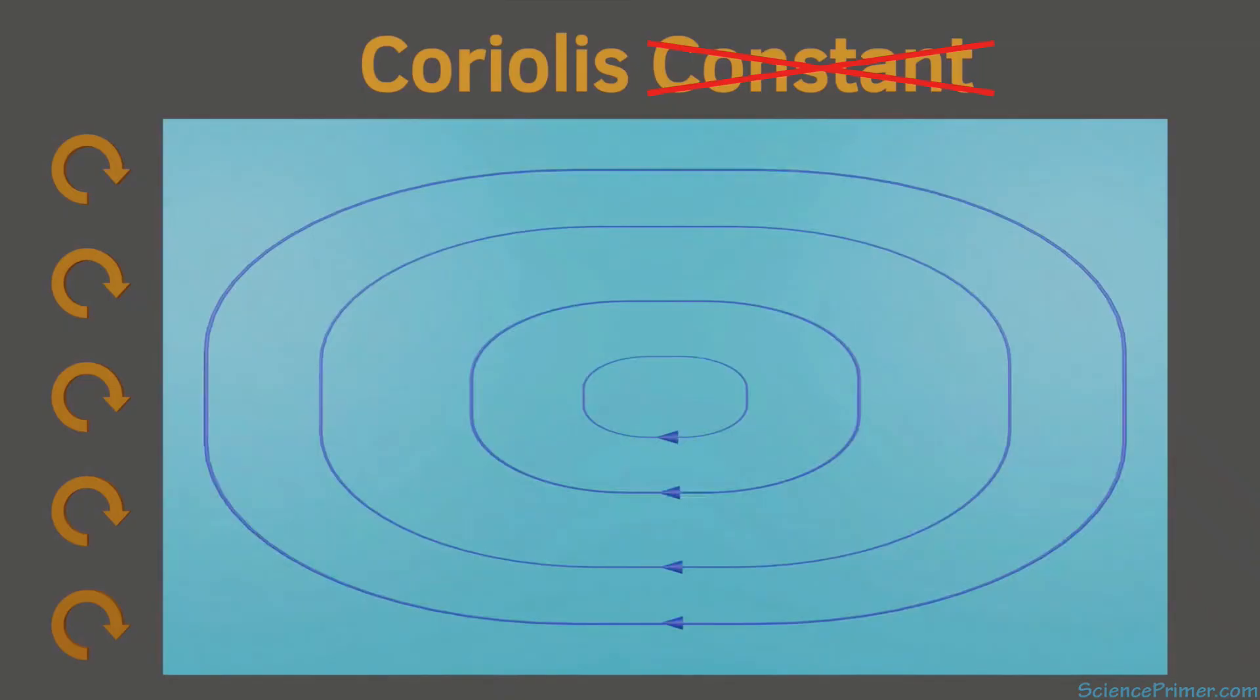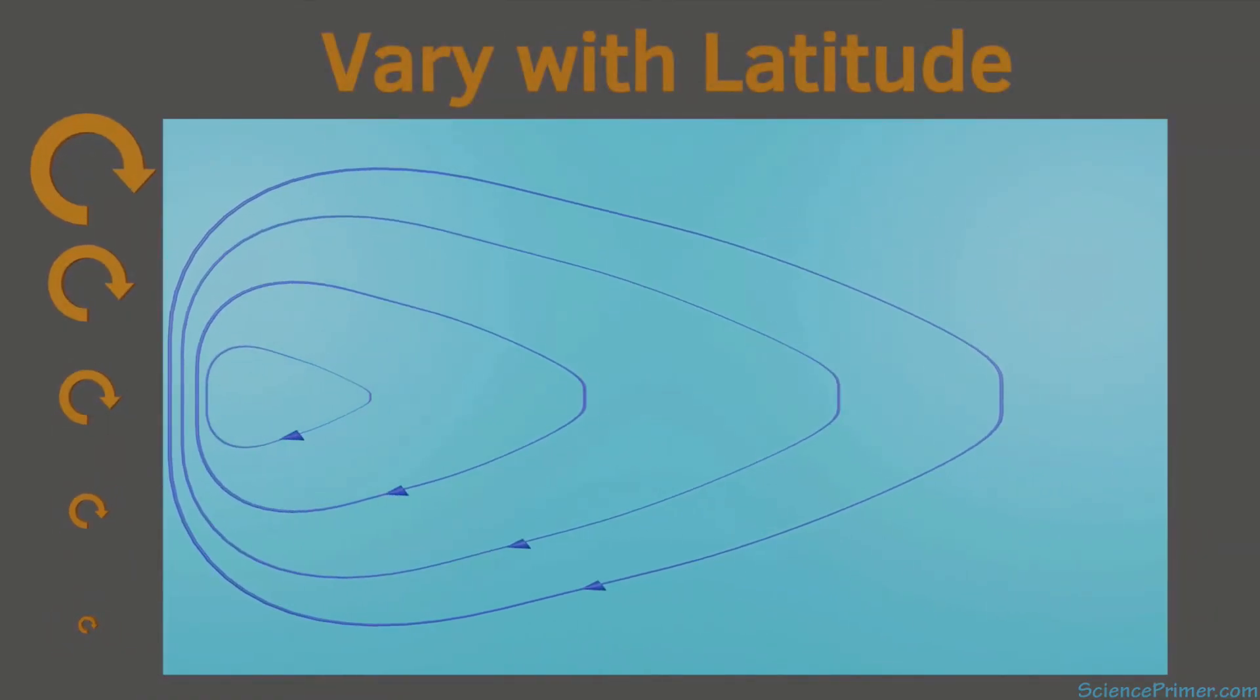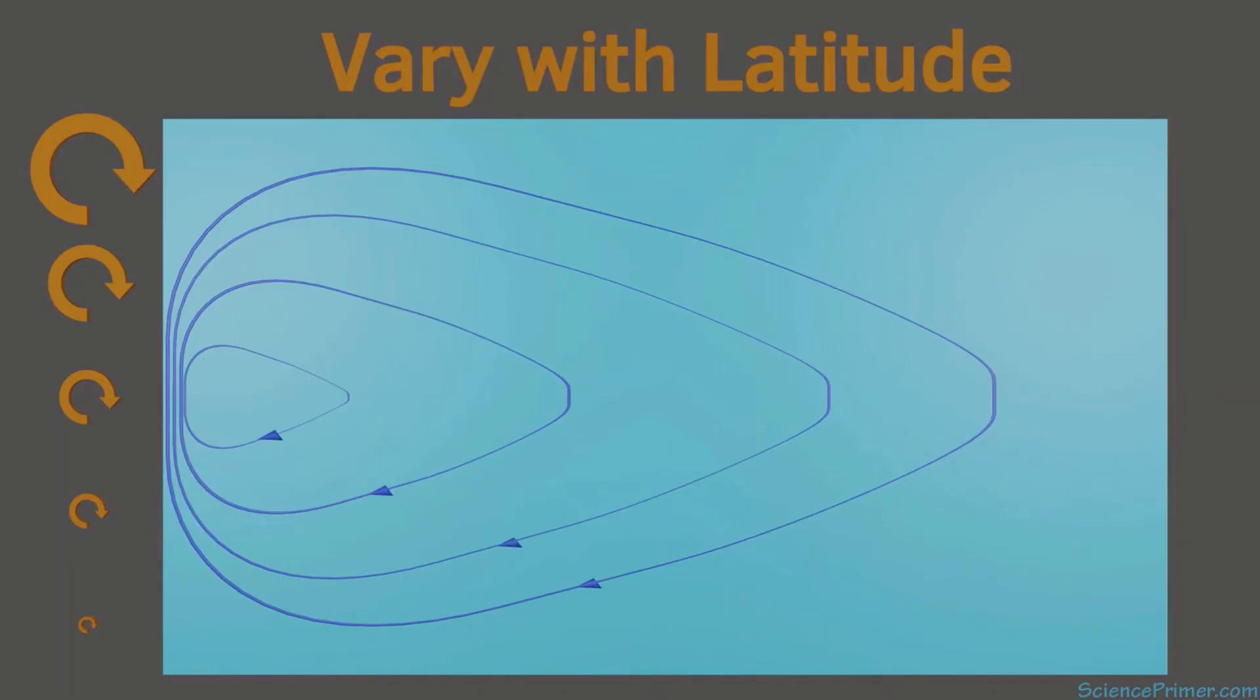So in a final scenario, Stommel allowed Coriolis force to vary. He made the values low near the equator and higher at higher latitudes. As soon as he did this, the particle path shifted to the left, creating a situation similar to what we see in real oceans.